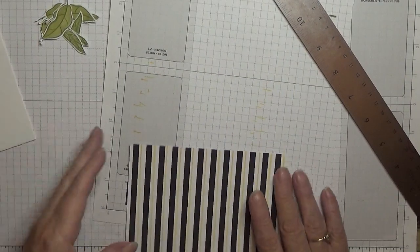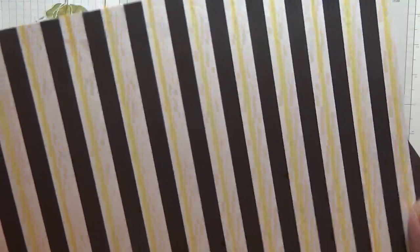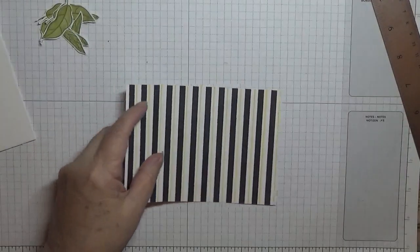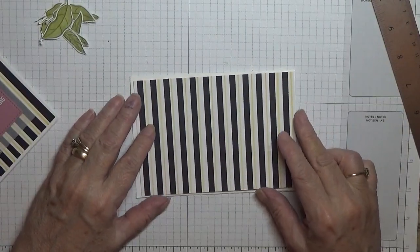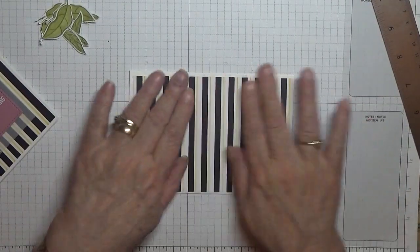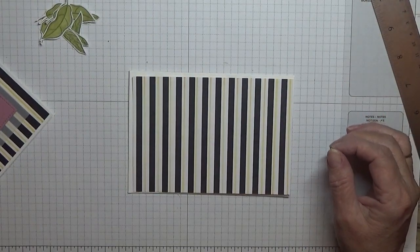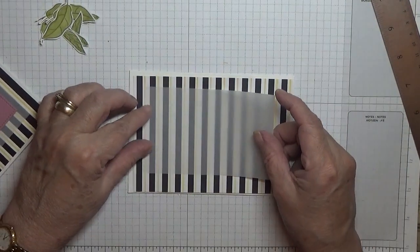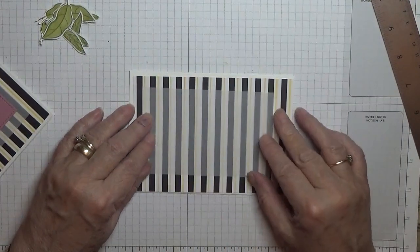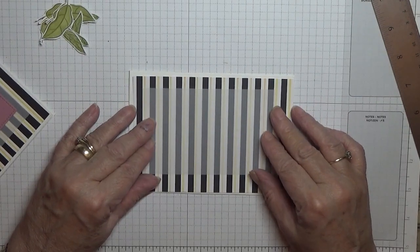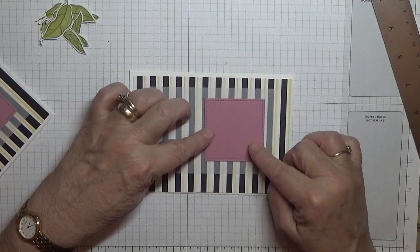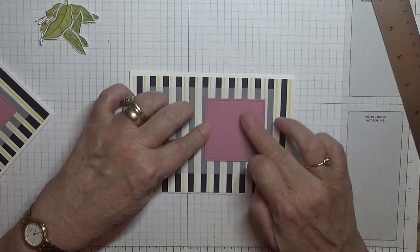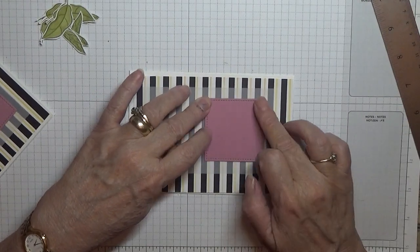You still can't see the yellow lines but they're there. There you can just see the yellow lines. Five and five eighths by three and seven eighths. I've got a piece of vellum here by two and seven eighths by four and five eighths. I have a stitched square piece and this is in Rococo Rose, and this is the second largest stitched square die.